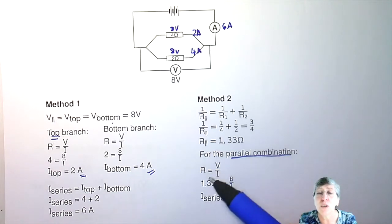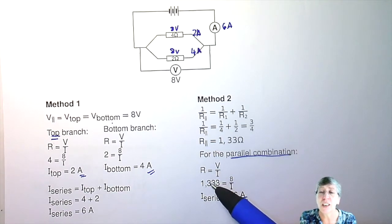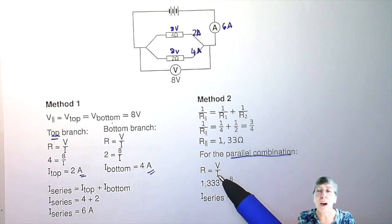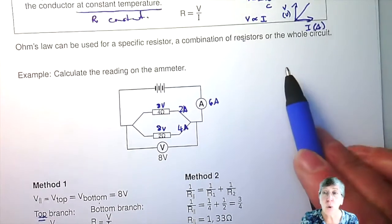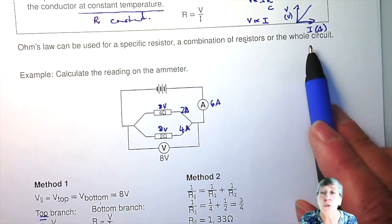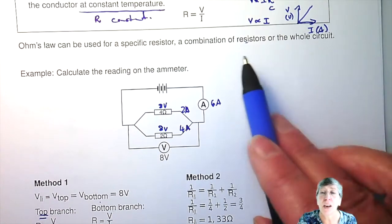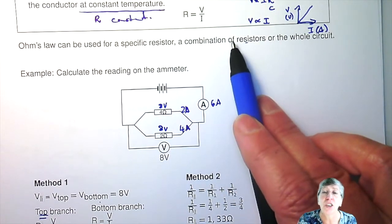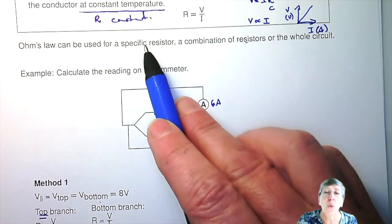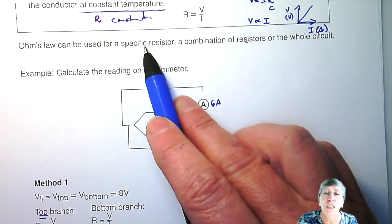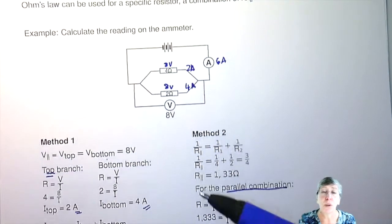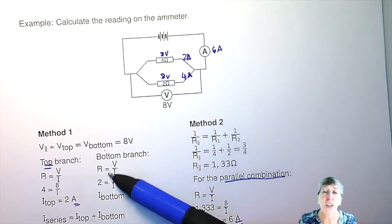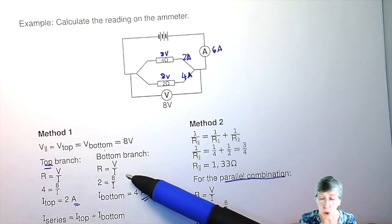So for Ohm's law, you need to decide what you are working with: are you working with the whole circuit, the parallel combination, or a specific resistor — so that you put the right values into Ohm's law?